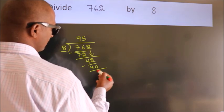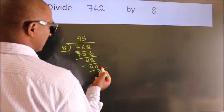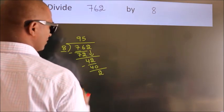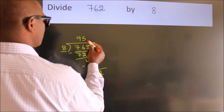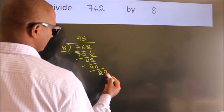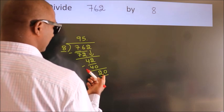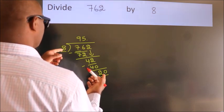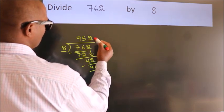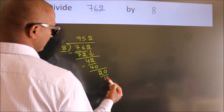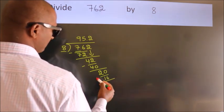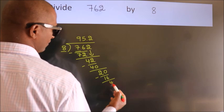After this, no more numbers to bring down. So what we do is, we put a dot and take 0. So 20. A number close to 20 in the 8 table is 8 twos, 16. Now we subtract. We get 4.